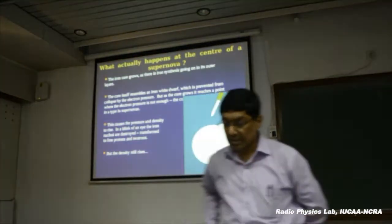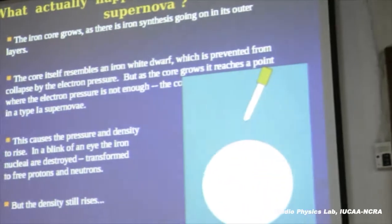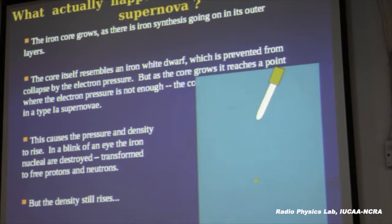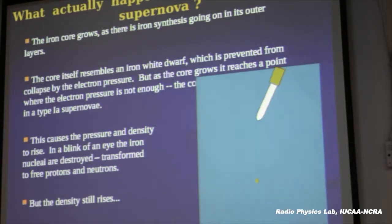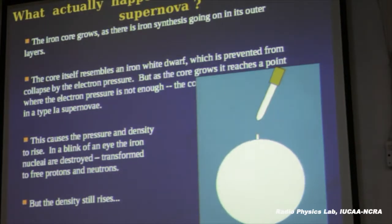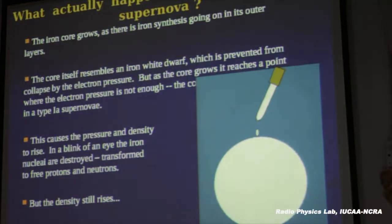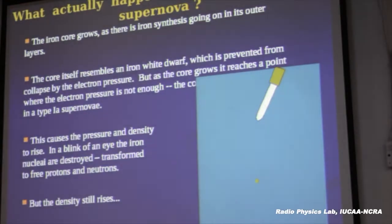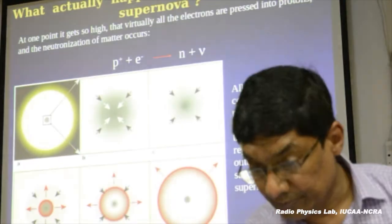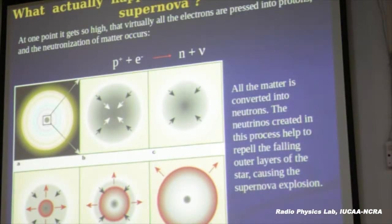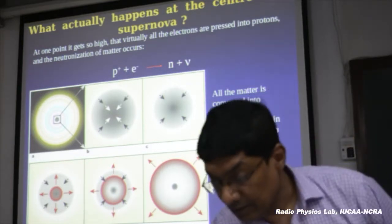In neutron stars, people worked out that you should get something of the order of 20 kilometers in size. If you conserve the angular momentum of the original rotating star, this should be rotating much faster. Similarly, if you conserve magnetic flux, then whatever magnetic field the original star had, flux conservation leads to a much higher magnetic field expected from neutron stars compared to a regular star like the sun.